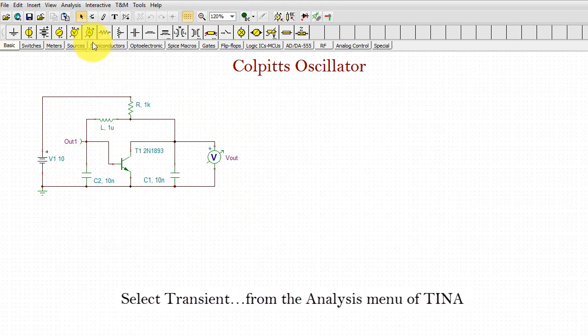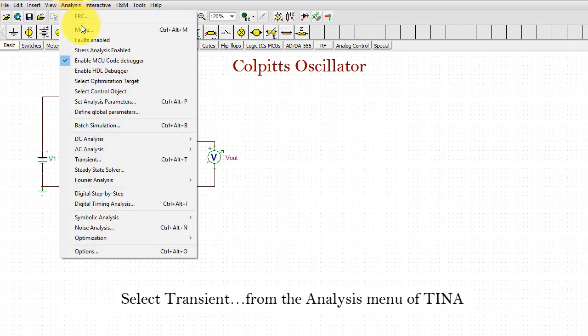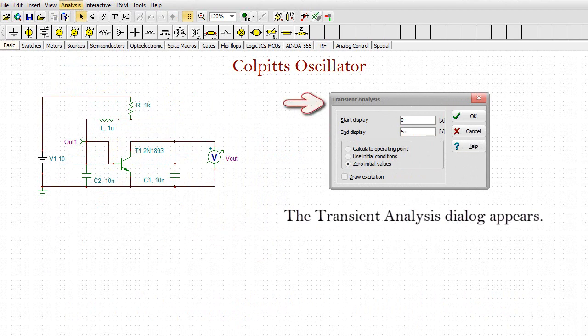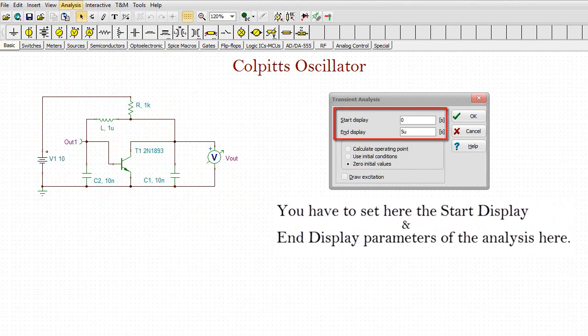Select Transient from the analysis menu of TINA. The transient analysis dialog appears.